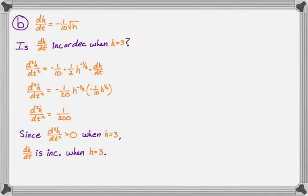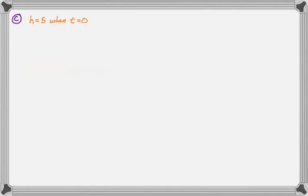So part C is actually just a separable differential equation. They tell you to use separation of variables, which is pretty nice of them. So we're told that h is equal to five when t is equal to zero. And we wanna solve for h in terms of t. So we still know this differential equation. I'm gonna separate. So I'm gonna bring over the root h. I'm gonna bring over the dt.